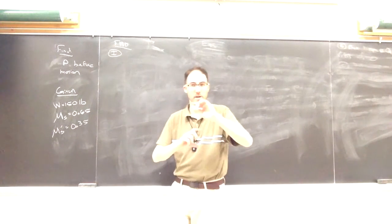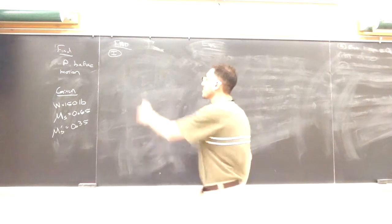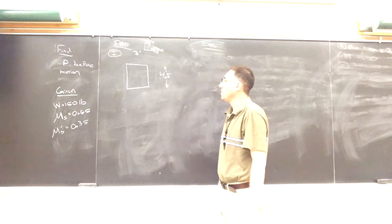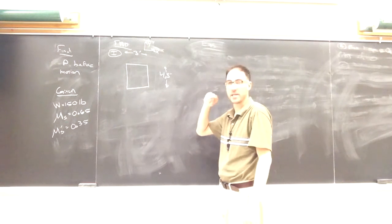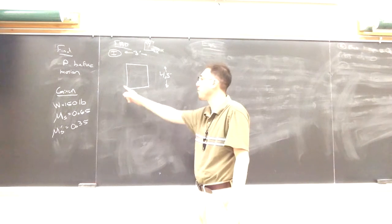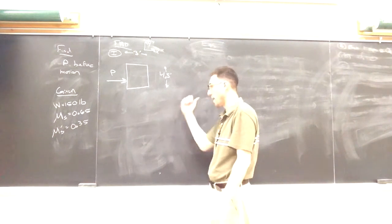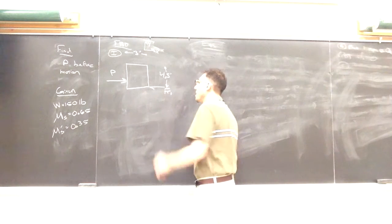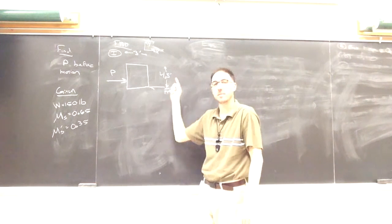Since the two boxes are not together — they're not one rigid body — we want to separate them like we would in a frames and machines problem. I'll start by modeling what happens to the top box. Because it's resting on the bottom box, if we're pushing it to the right with that applied force, it will want to move to the right. So the friction force from the bottom box on the top will oppose that. I'll call that FR1, located at the contacting surface and parallel to it, pointing to the left.